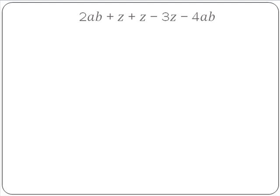2AB plus Z plus Z minus 3Z minus 4AB. So again our like terms are AB's and we have Z's. So 2AB minus 4AB will give us minus 2AB.